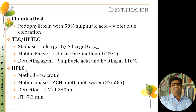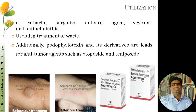HPLC is another identification method where the sample is solubilized into the mobile phase and run using an isocratic method with a mobile phase of acetonitrile:methanol:water. The eluate is detected using a UV spectroscopy detector at 280 nm. A peak observed at a retention time of 27.3 minutes with a lambda max of 280 nm confirms the presence of podophyllotoxin.